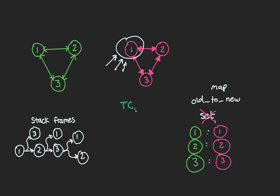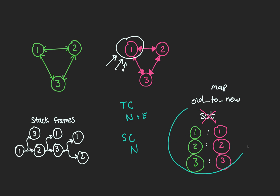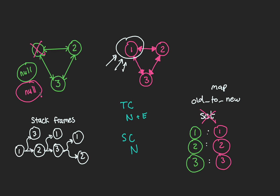The time complexity for graphs is usually in terms of nodes and edges, so it comes out to O(N + E), where N is the number of nodes and E is the number of edges. The space complexity is also O(N), where N is the number of nodes in our hash map. Before we get into the code, note there's one edge case: we can technically be given a null pointer as input. In that case, we'll just return a null pointer.